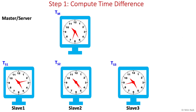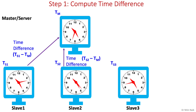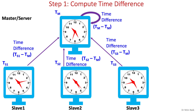In the first step, the master computes the time difference between its clock and the clock of all non-faulty slaves. Here we have three slaves, so it will compute the time difference with slave 1, slave 2, and slave 3. It also computes the time difference with its own clock as per the proposed version. Note: the time difference could be positive or negative.